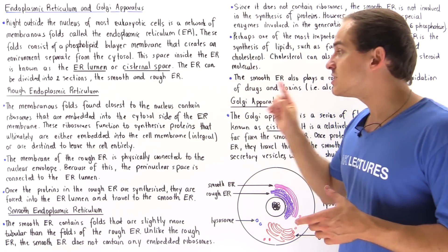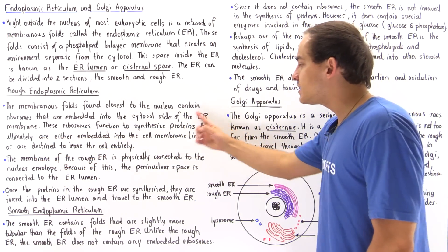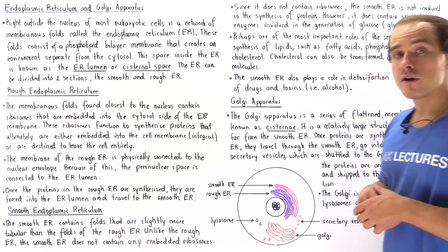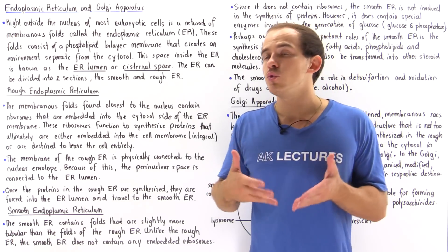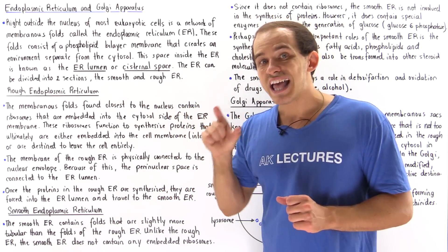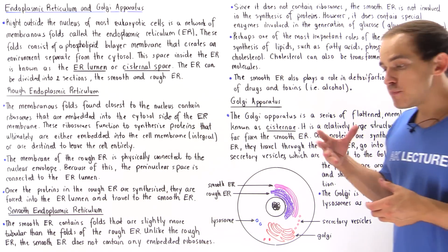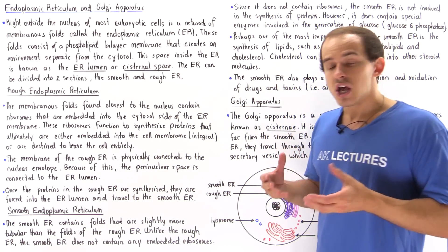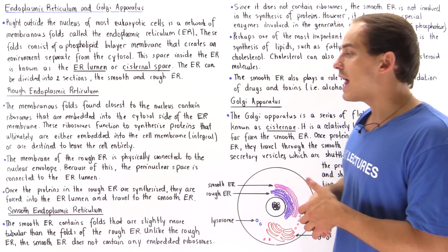These ribosomes function to synthesize proteins that are ultimately either embedded into the cell membrane — known as integral proteins — or destined to leave the cell altogether. The membrane of the rough ER is physically connected to the nuclear membrane, or nuclear envelope, and so the perinuclear space and the ER lumen are physically connected as well. Inside the nucleus, in the nucleolus, we synthesize the ribosomal RNA subunits needed to create the ribosomes found in the rough ER.